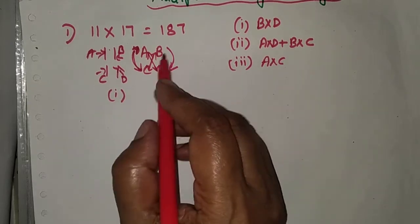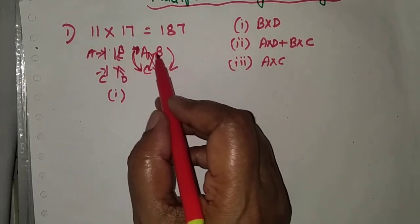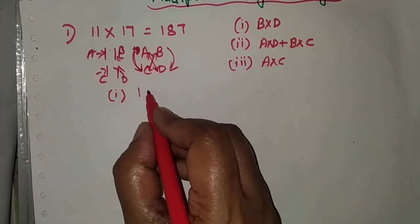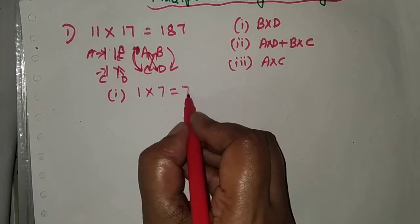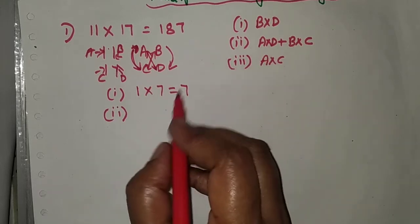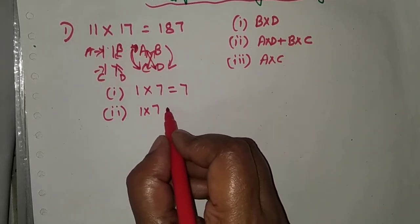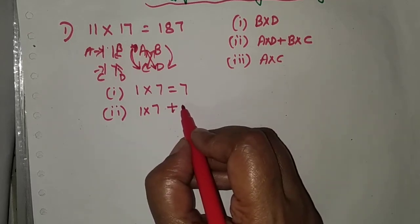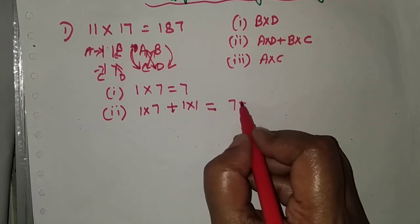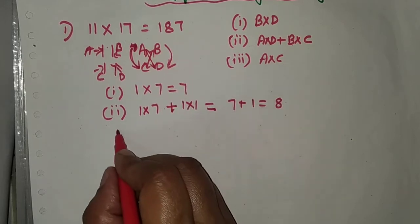First problem: 11 multiplied by 17, result is 187. First step is B into D: B is 1, D is 7, so 1 into 7 equals 7. Second step is A into D plus B into C: 1 into 7 plus 1 into 1, which is 7 plus 1, equals 8.